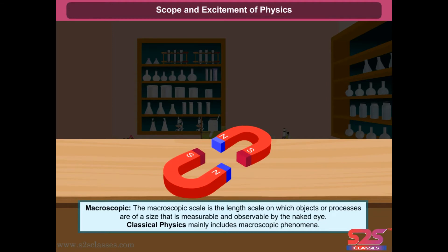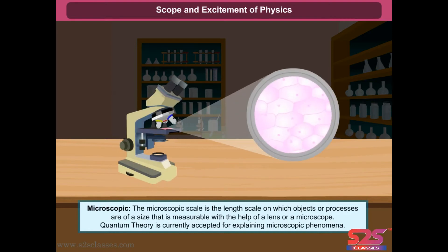Macroscopic. The macroscopic scale is the length scale on which objects or processes are of a size that is measurable and observable by the naked eye. Classical physics mainly includes macroscopic phenomena. Microscopic. The microscopic scale is the length scale on which objects or processes are of a size that is measurable with the help of a lens or a microscope. Quantum theory is currently accepted for explaining microscopic phenomena.